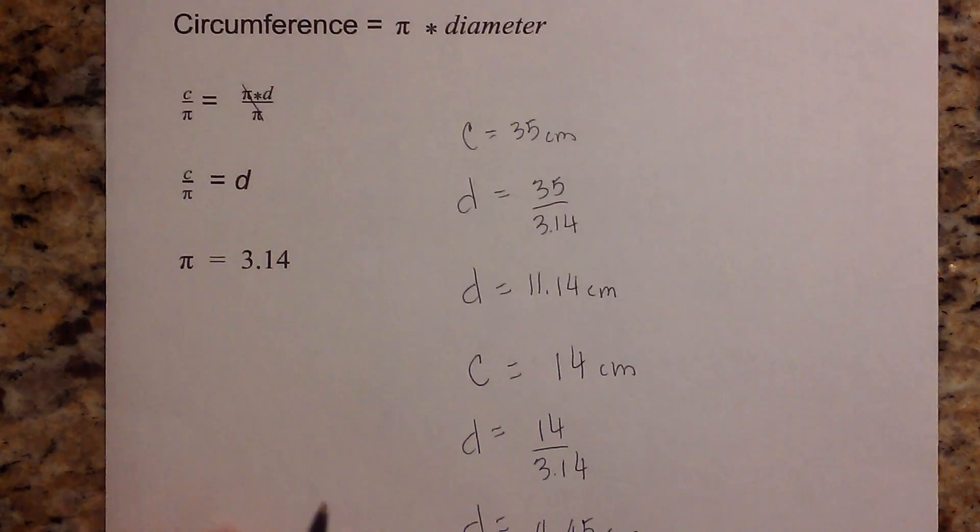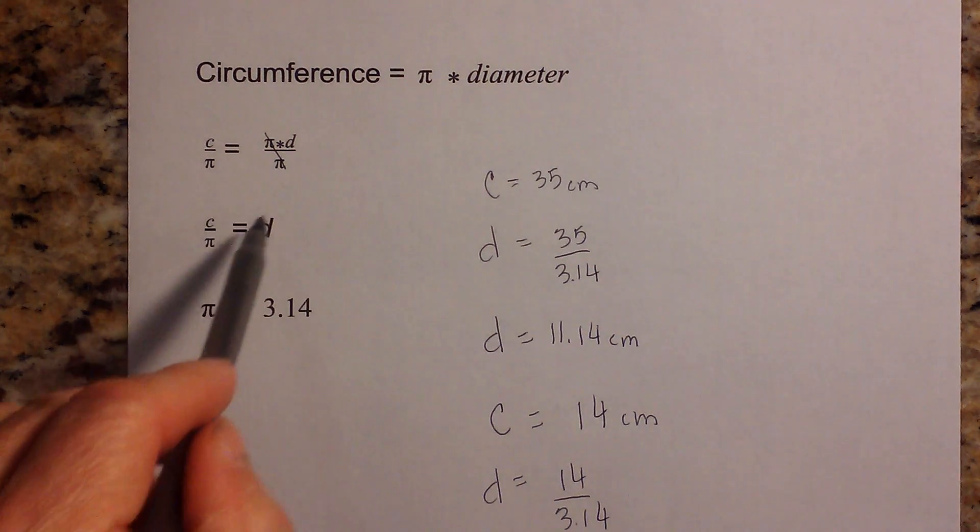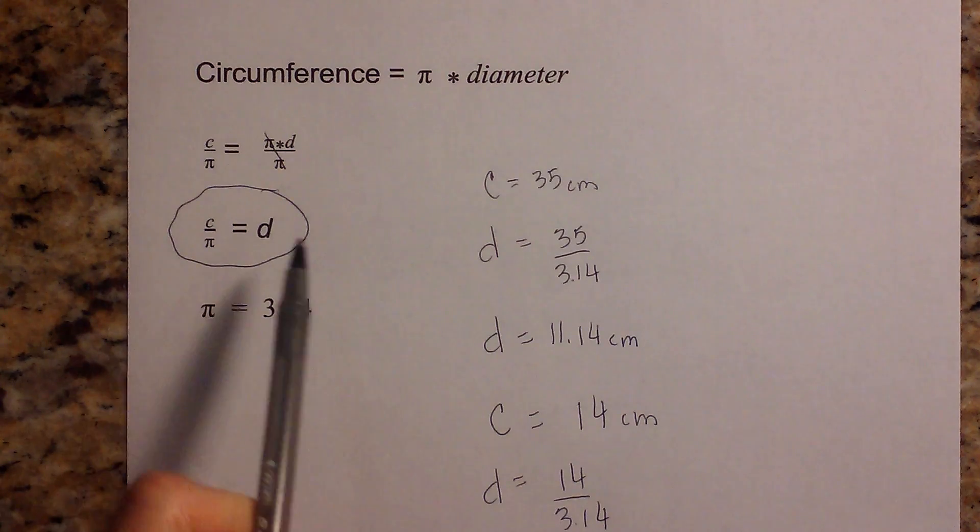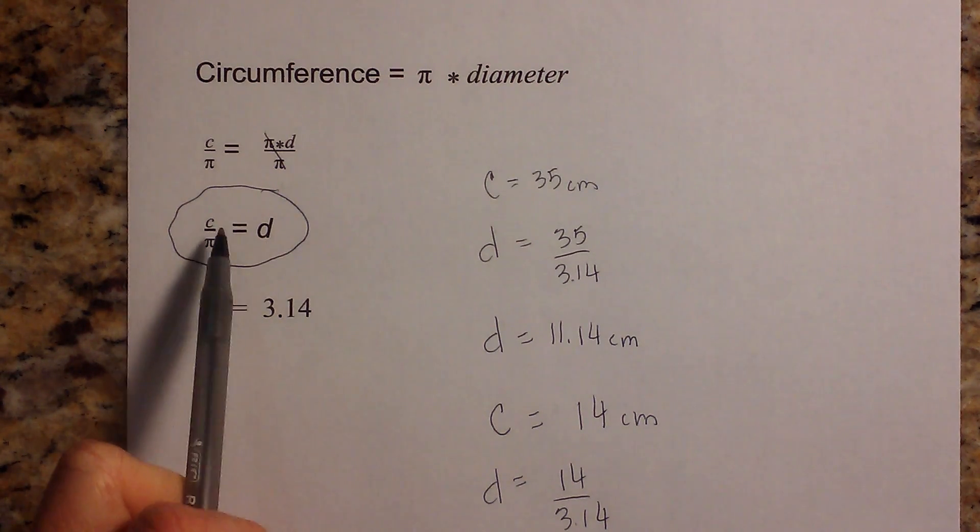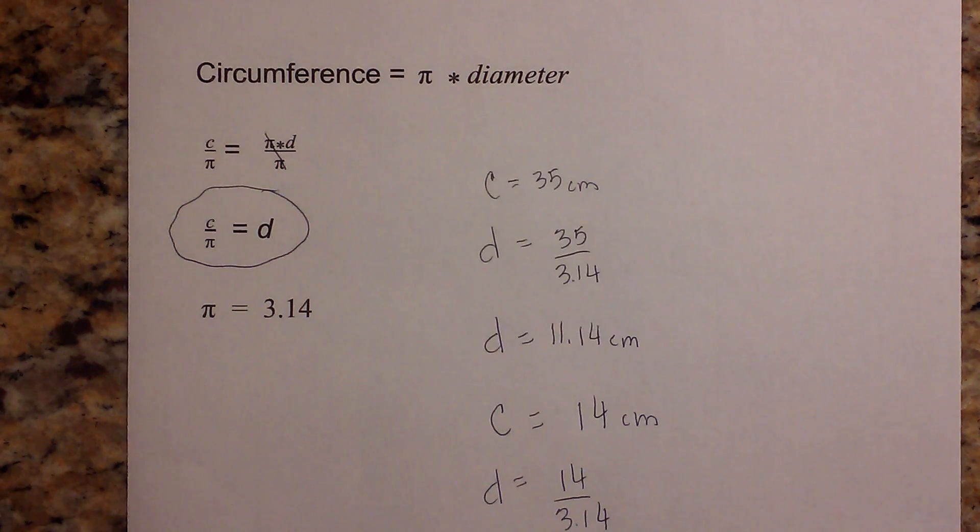So in recap, in order to get the diameter given the circumference, you just use this formula right here: diameter is equal to circumference divided by pi. So there we go, I hope that helps in calculating diameter from circumference. Thanks for watching, and Moo Moo Math uploads a new math and science video every day. Please subscribe and share.